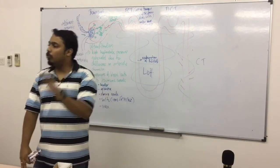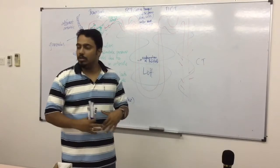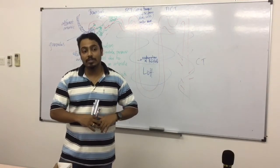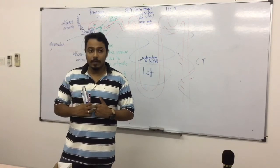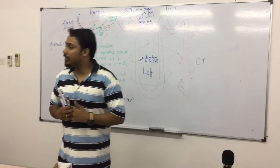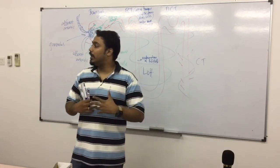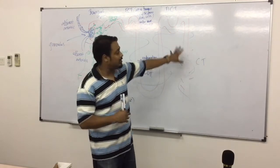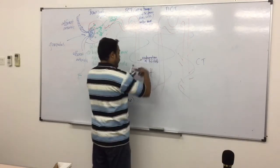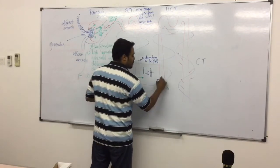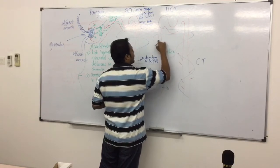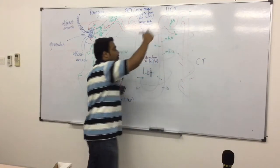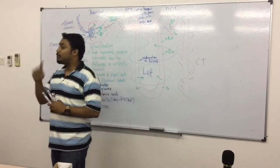Reabsorption of H₂O happens everywhere — in the Loop of Henle, in the Distal Convoluted Tubule, even in the collecting tubules. Whenever you use the word tubule, just remember they have reabsorption. But reabsorption of water and salt follows your need. Do you have excessive salt in your body due to what you consumed? Then your body will have to release more, so the active transport will decrease. If you need more water, obviously more reabsorption will take place. Mainly, reabsorption influenced by the level of osmotic pressure happens in the collecting tubules.